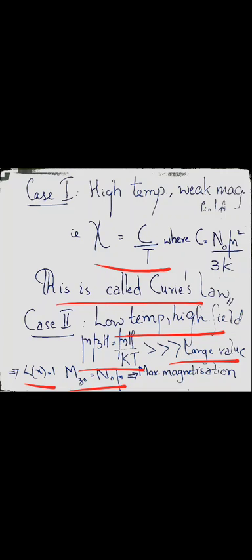In summary, we have studied the statistics of paramagnetism using a classical approach with canonical ensemble formulation. We found the partition function of the system, derived the magnetization, and studied how it varies when the field is high and temperature is low (saturation) and when the field is low and temperature is high (Curie's law). This gives us the complete nature of the paramagnetic material. The same analysis can also be given in terms of quantum mechanical treatment, which we will deal with in the next class.